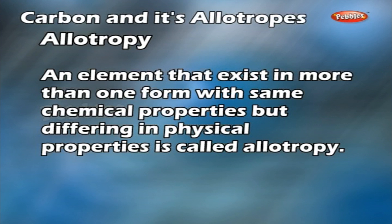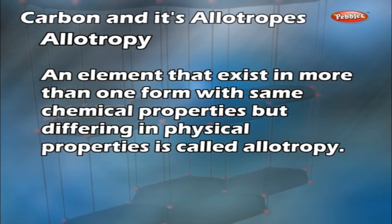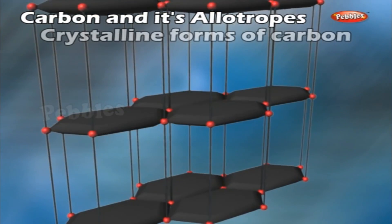Allotropy: An element that exists in more than one form with same chemical properties but different physical properties is called allotropy.